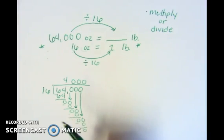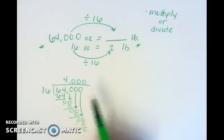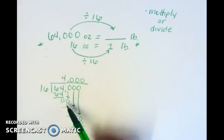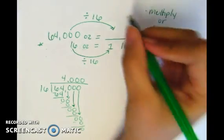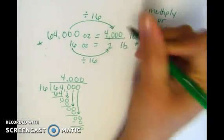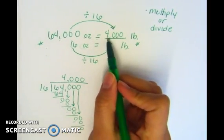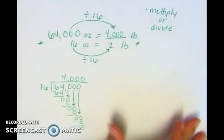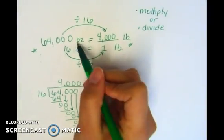I divided 64,000 by 16 and got the answer 4,000. You can double-check your work here: 4 times 16 is 64, and 64 minus 64 is zero. I brought down all my zeros and had the answer. So I know that 64,000 ounces is the same thing as 4,000 pounds. This is called a single conversion because I only converted my units once.